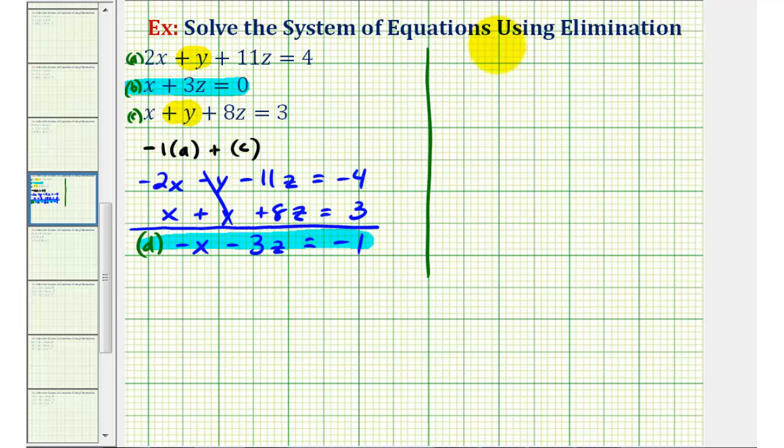So we want to solve the system X plus 3Z equals zero and negative X minus 3Z equals negative one. And again, this was equation B and this was equation D.